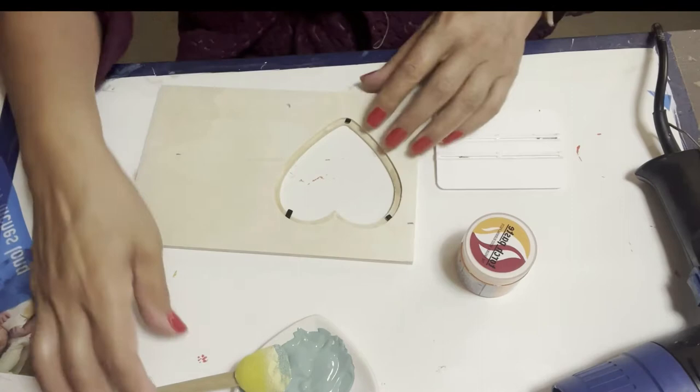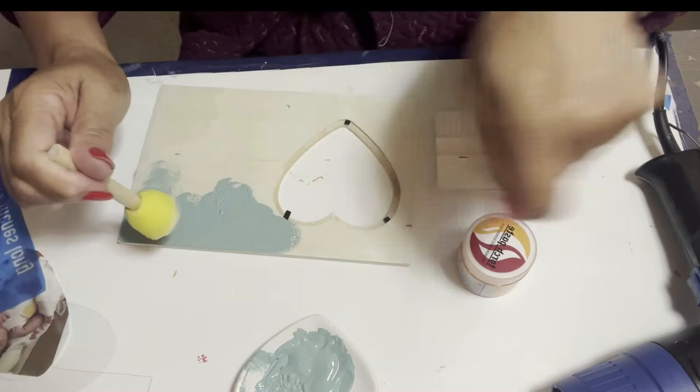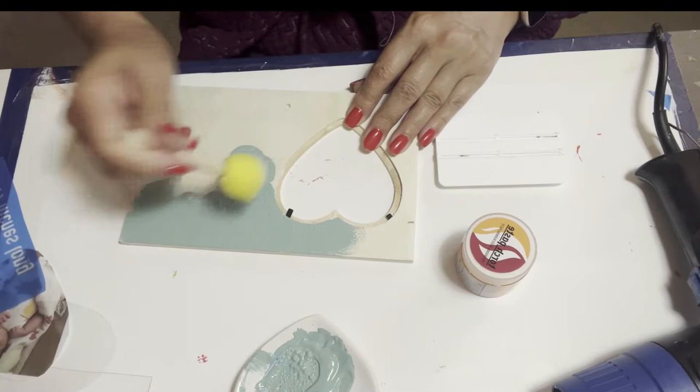The first thing I'm going to do is paint my image on the other side. Rather than do it with a brush that can leave strokes, I'd rather do it with these sponges that I also got at the Dollar Tree.